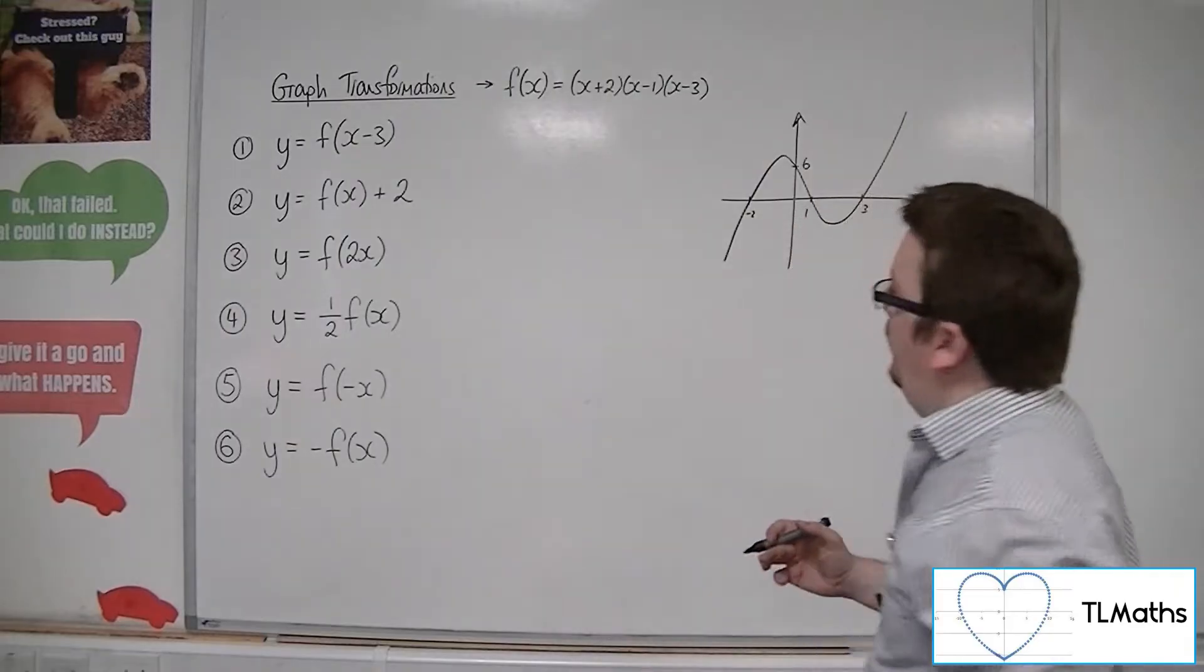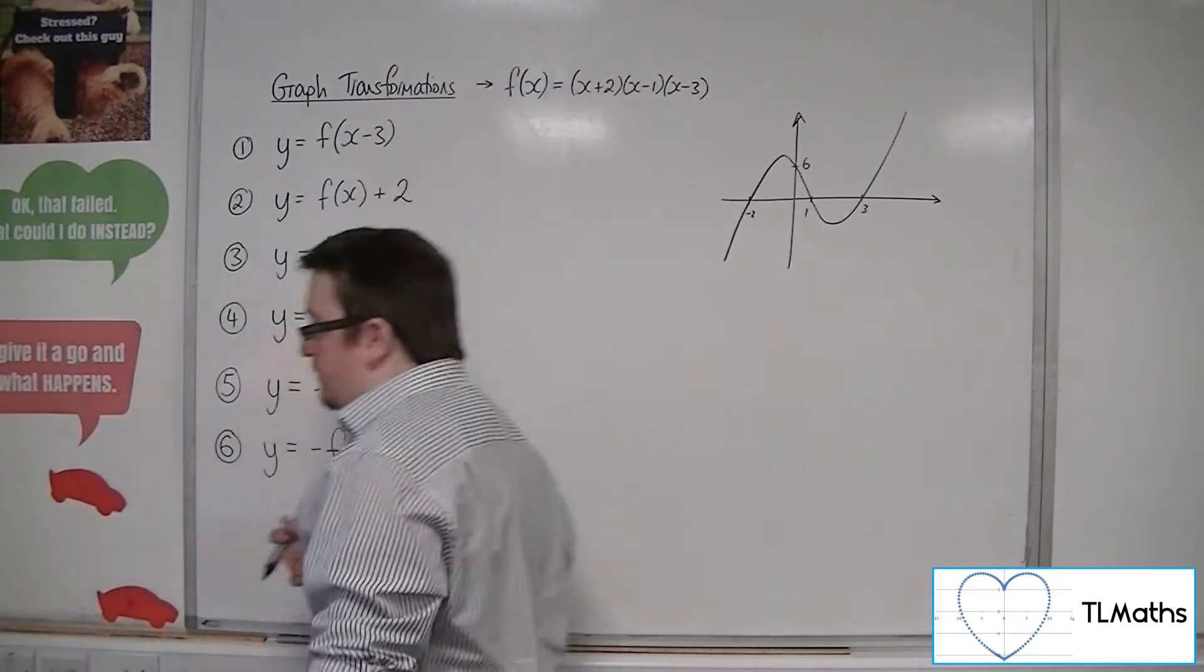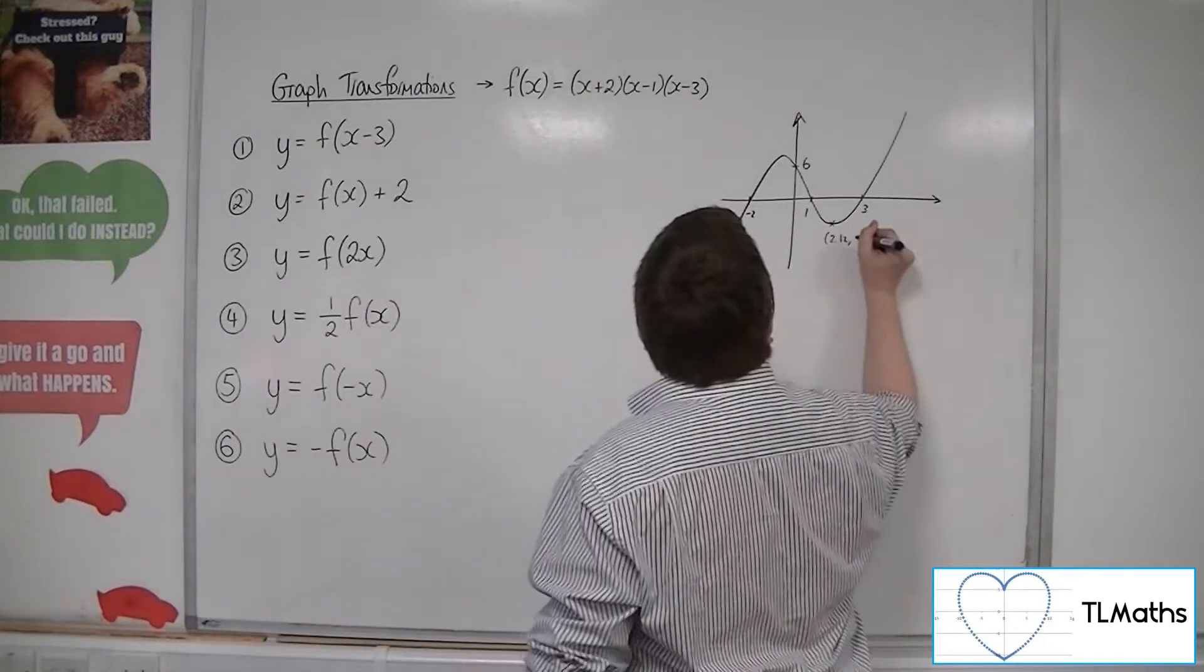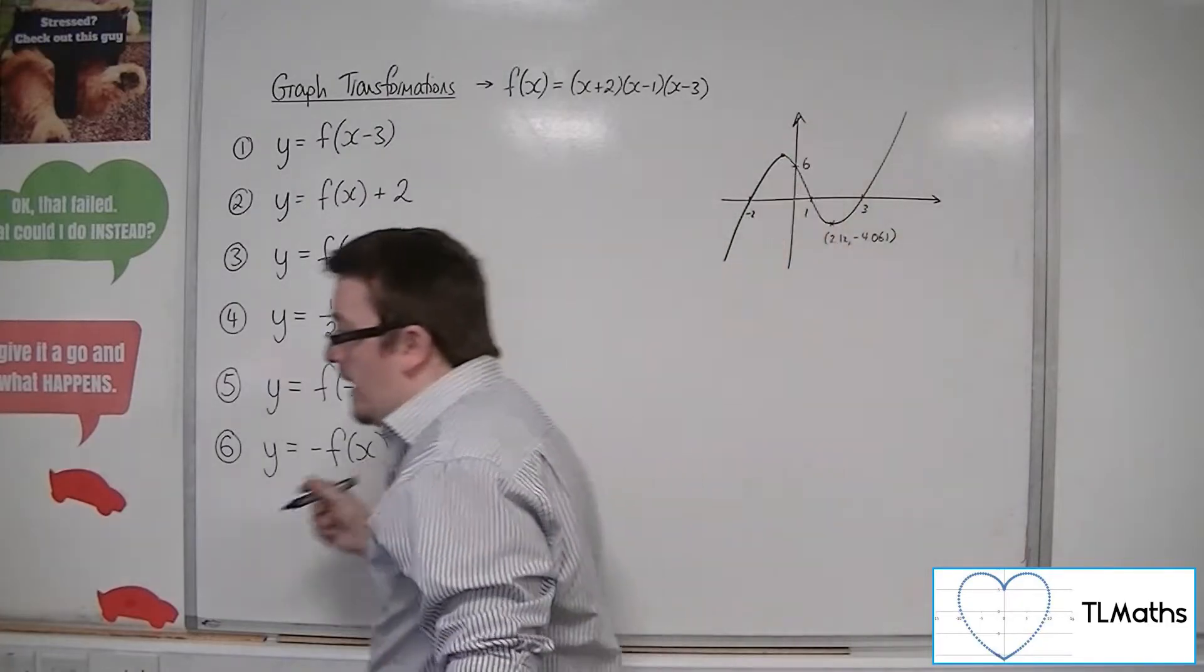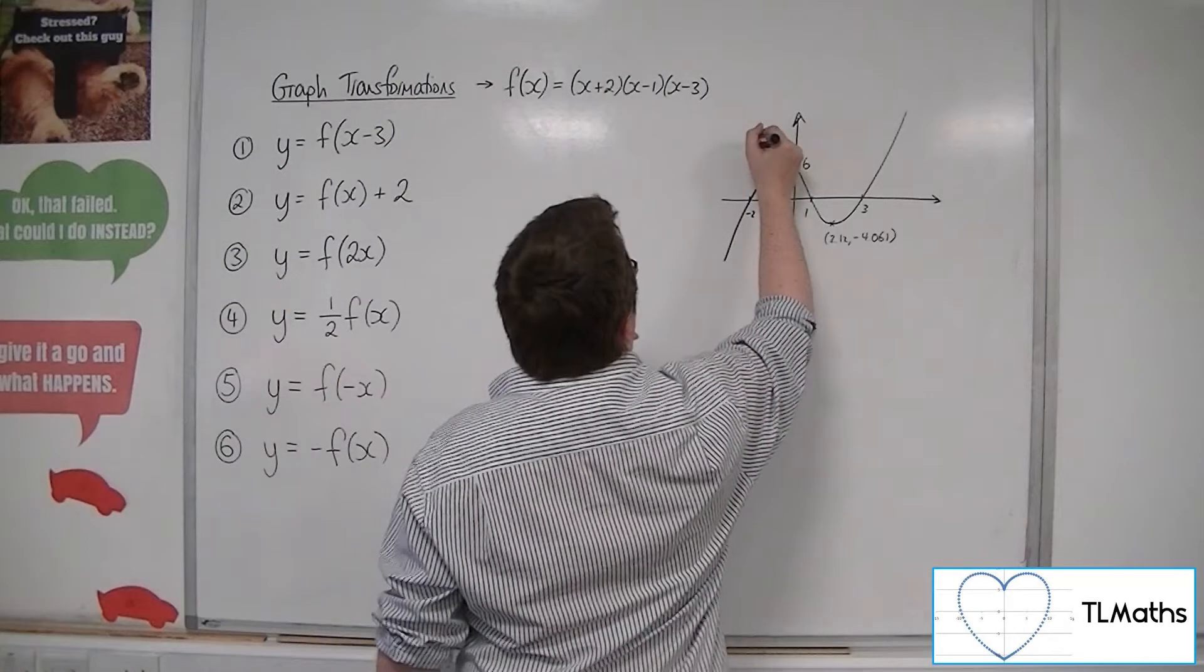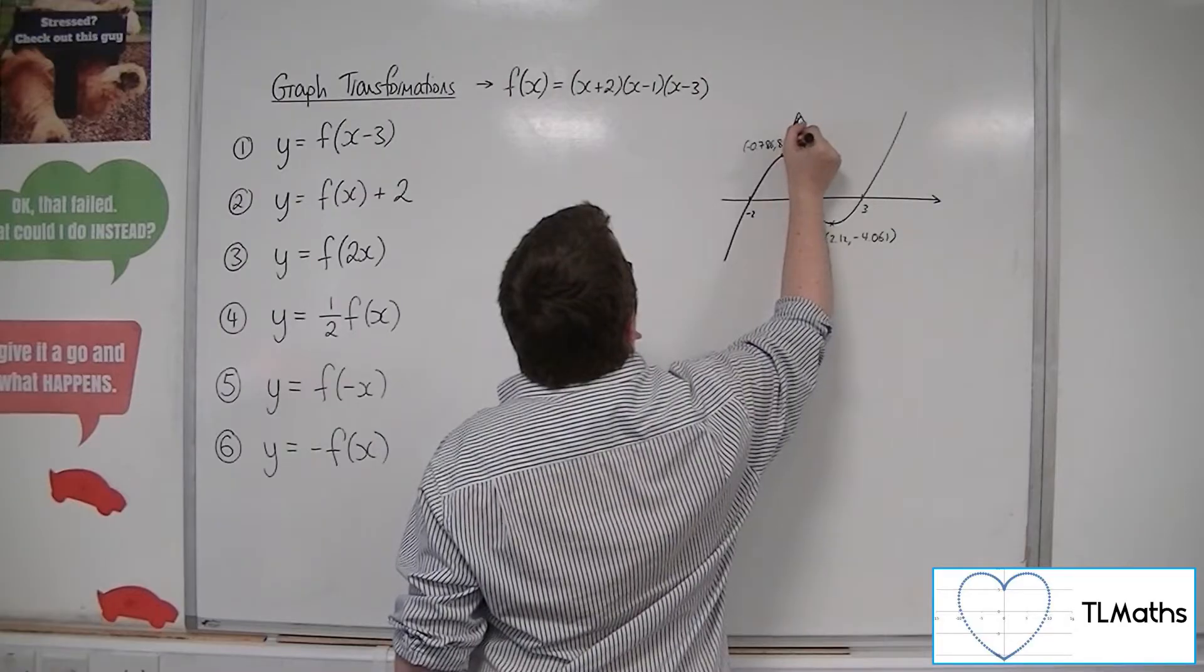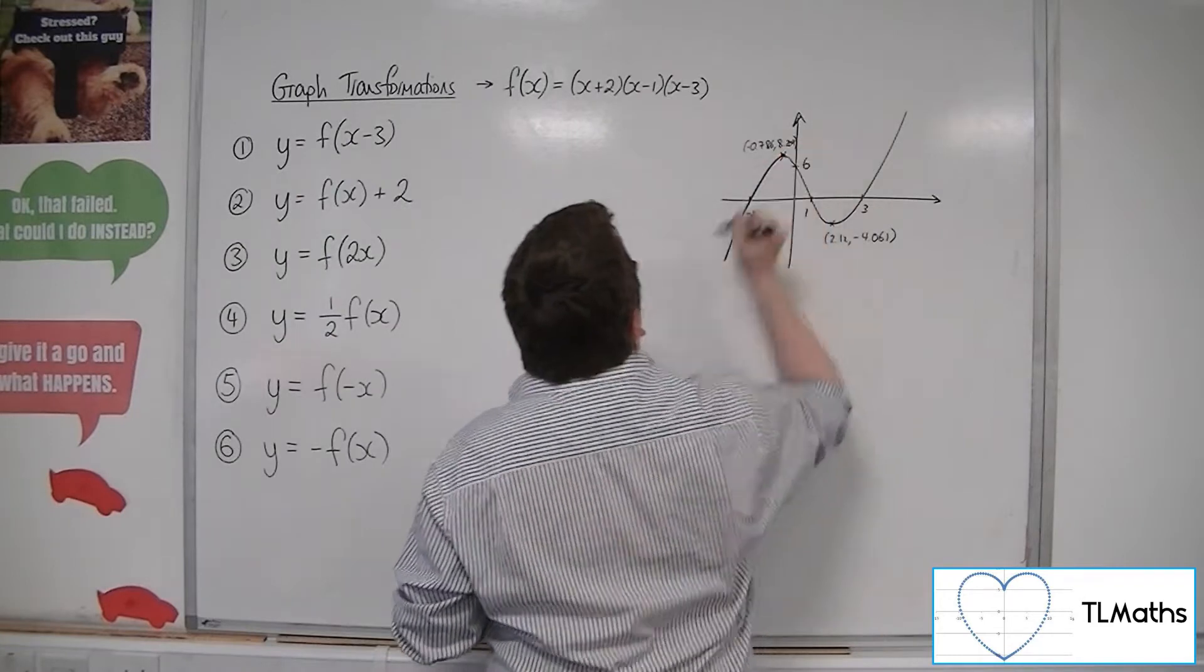Now, in order to get a good idea of where those turning points are, I've had a look at Desmos just to check it out. So this point here is (2.12, -4.061) and this point up here is (-0.786, 8.209), for reference sake of how high and how low this curve is getting.